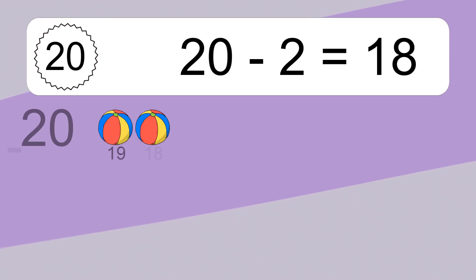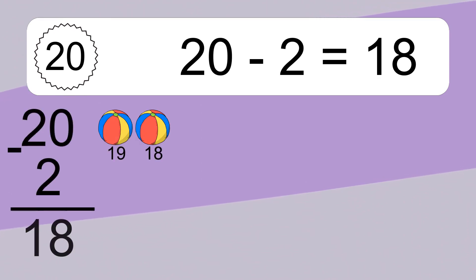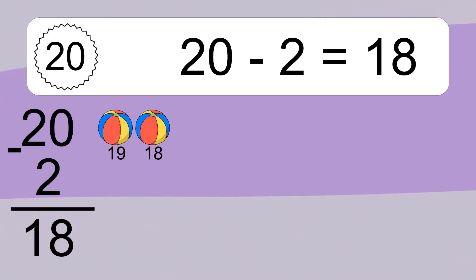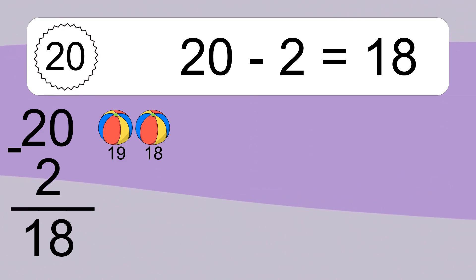20 minus 2 equals what? 20 minus 2 equals 18. Let's count it: 19, 18.